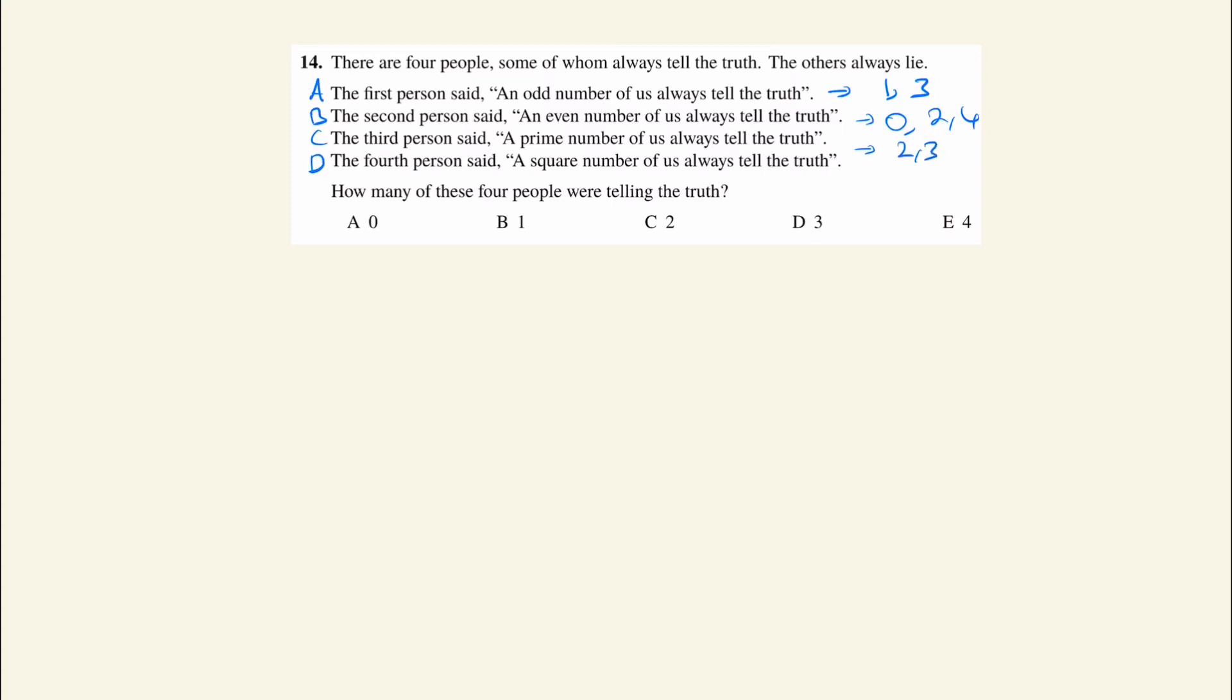Now we can recognize that no odd number can be an even number, so whatever A is saying, B must be the opposite. So if A is true, B must be false, and likewise if A is false, B must be true.